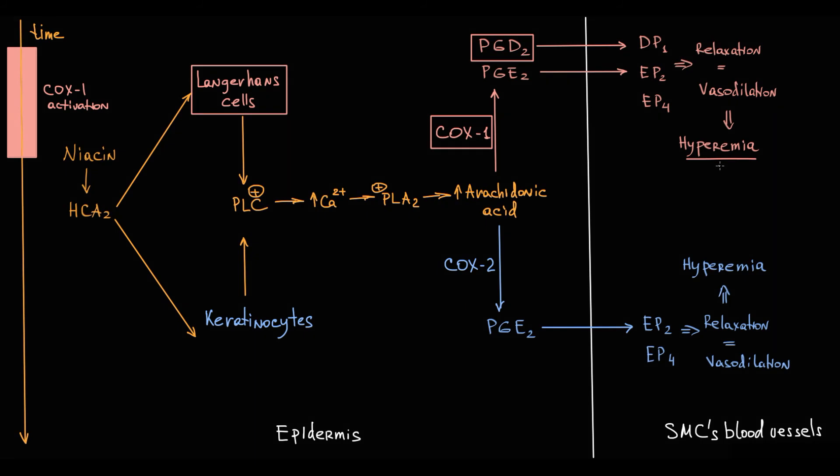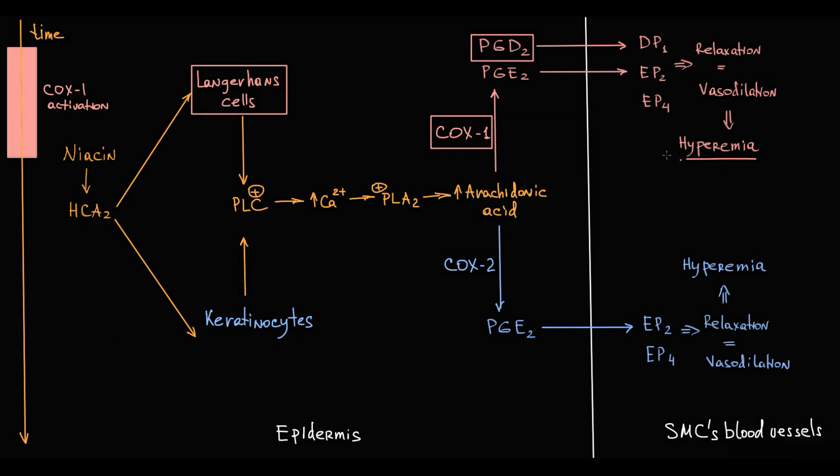But this effect is short-lived and called the minor hyperemia peak. Only then, COX-2 enzyme in keratinocytes becomes fully activated and produces large amounts of prostaglandin E2, causing prolonged hyperemia that causes the major hyperemia peak.